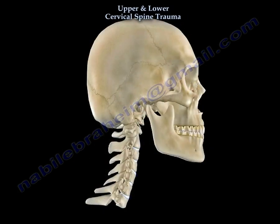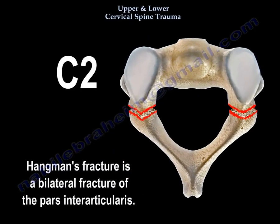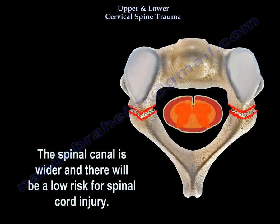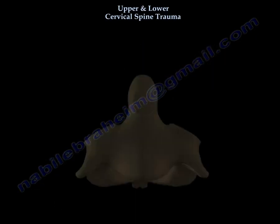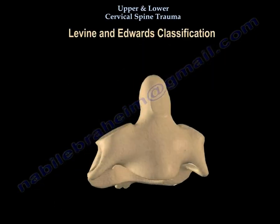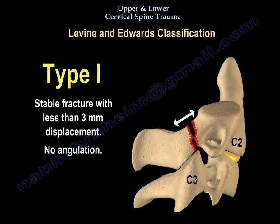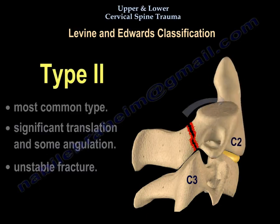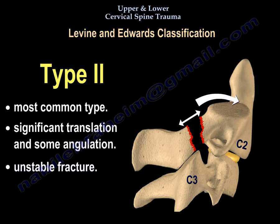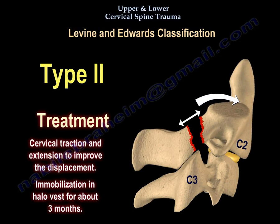Hangman fracture is a fracture that involves the pedicles of C2, so the spinal canal is wider and there is a low risk for spinal cord injury. There are several types. Type 1 is non-displaced — the fracture is vertical with no angulation and no translation, and you treat that by cervical orthosis. Type 2 has some angulation and translation, so you treat it by traction and extension and put the patient in a halo for about 3 months.